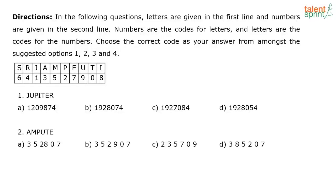Now, this one is a very easy one. In the following questions, letters are given in the first line and numbers are given in the second line. Numbers are codes for letters and letters are codes for numbers. Choose the correct code as your answer from amongst the suggested options 1, 2, 3 and 4. What are they doing? For each letter, they are using a number. J is coded as 1 and U is coded as 9, P is coded as 2.